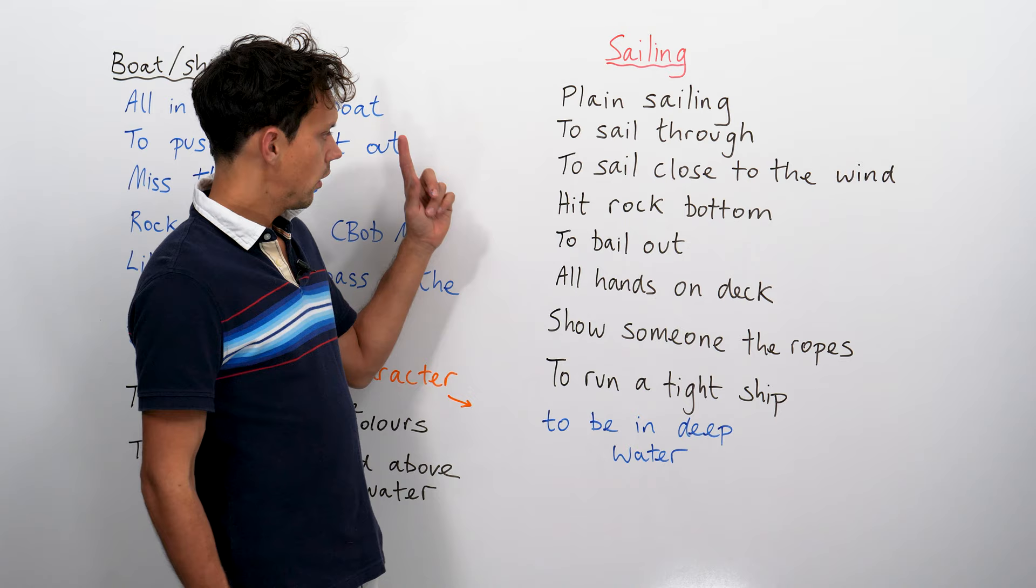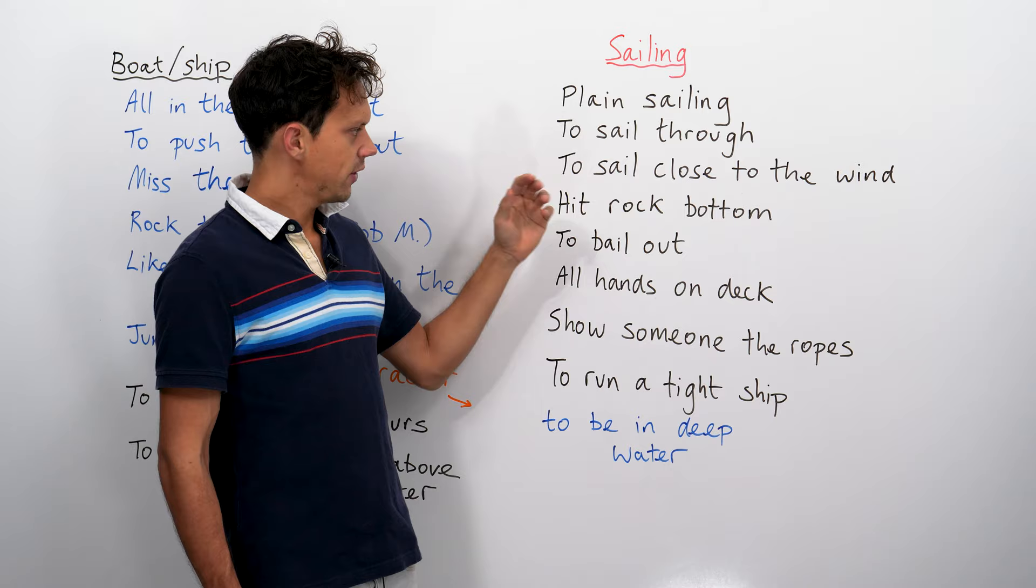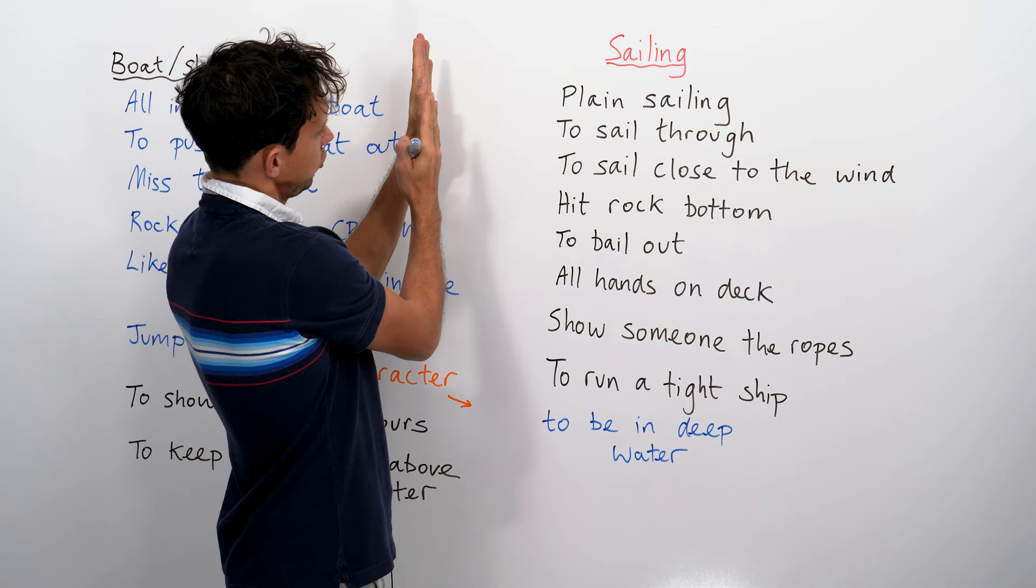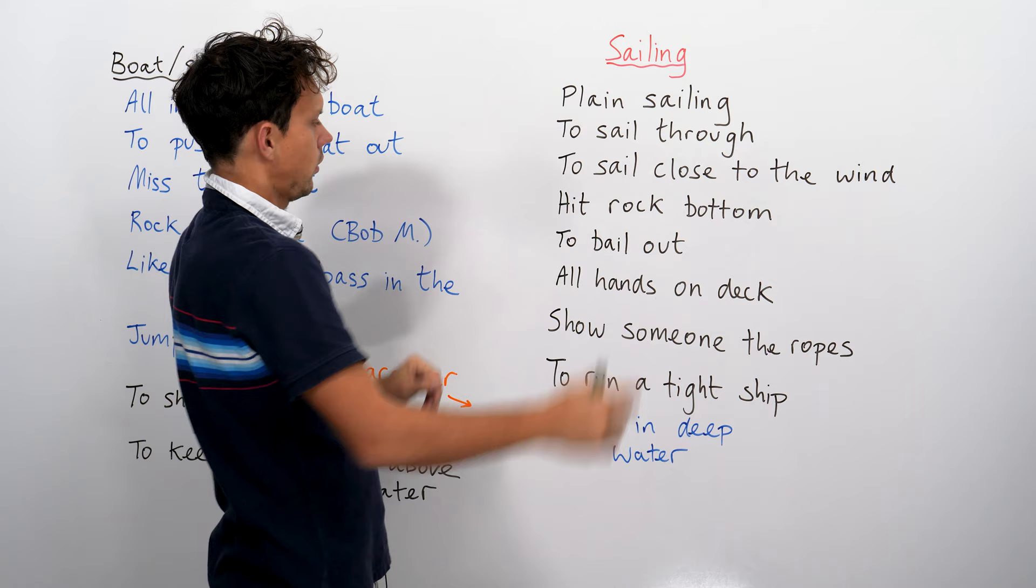To sail close to the wind. This means to be quite risky. I showed you earlier that you can't sail directly into the wind. So this is impossible and you're choosing to be just possible. You're taking risk. To sail close to the wind, to take risk.